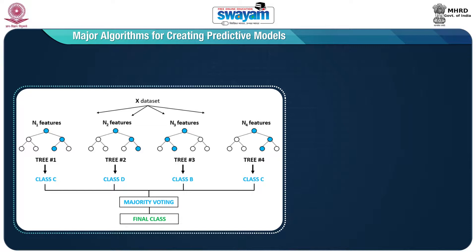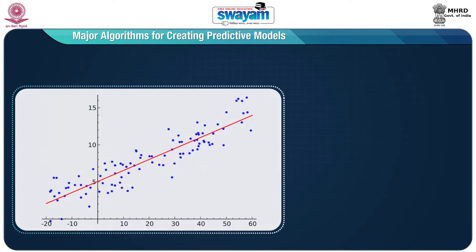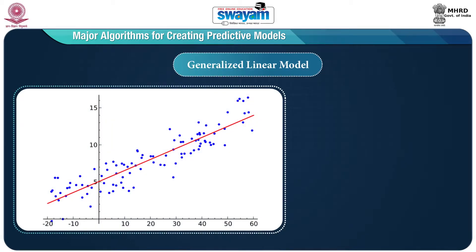With the existing models, the major algorithms used for creating predictive models are as follows. The first one is the random forest algorithm — this algorithm creates a multitude of decision trees at training time and outputs the class that is the mode of classes or mean prediction of individual trees. It is capable of handling both classification and regression to classify large data.